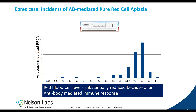Eprex was introduced onto the market in the early 90s without major side effects. From early 90s till 98, no major side effects. But from 98 onwards, there was an increase in the incidence of a form of anemia, which was called pure red blood cell aplasia, and this caused serious adverse events in patients who were already weakened because of their disease.